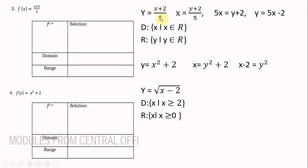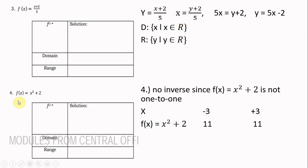Number 3: f(x) = (4x + 2)/5. Change to y = (4x + 2)/5, interchange x and y: x = (y + 2)/5. Cross multiply: 5x = y + 2. Transpose: y = 5x − 2. The inverse is f⁻¹(x) = 5x − 2. The domain is the set of real numbers, since these are linear functions.